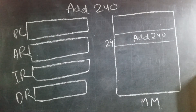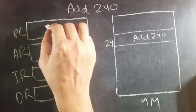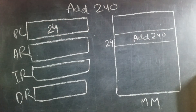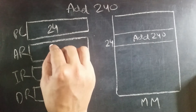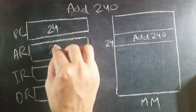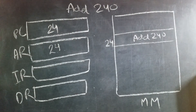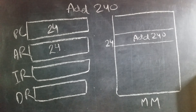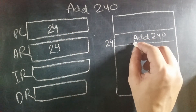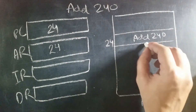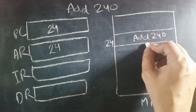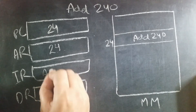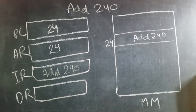Let's say this ADD 240 is located in the 24th location in main memory. So while the 23rd instruction is being executed, the program counter will have 24. It will send that 24 to address register. After the 23rd instruction has completely executed, address register will now have 24. Address register will place that on the address bus, that will go to main memory and see what's on location 24. The address bus goes to main memory, the 24th location — it sees ADD 240. This is an instruction, so it will come back to instruction register, and now instruction register will have ADD 240.